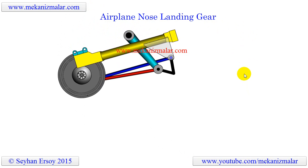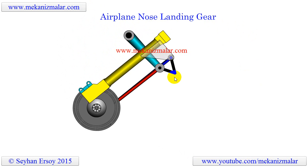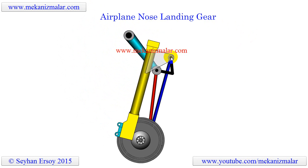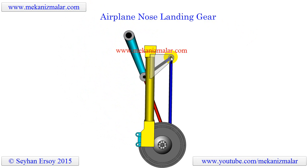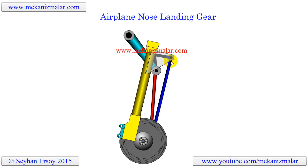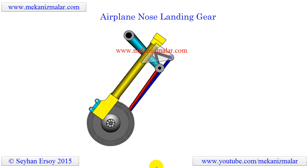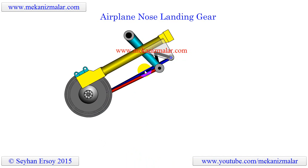The main strut, shown in blue, has two pivot points. The upper end is pivotally attached to the aircraft, and the lower end is attached to a wheel assembly. The main strut is rotatable about the upper end pivot point through a given angle defined by the extended and retracted positions.